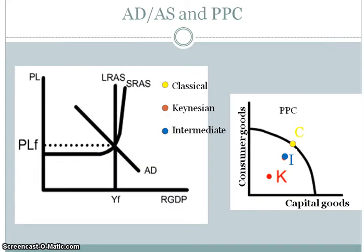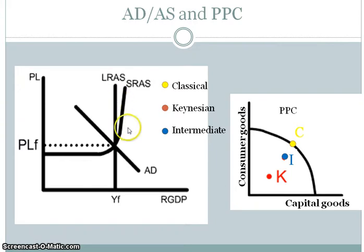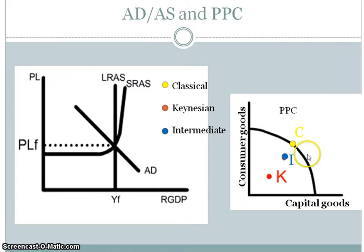For the ADAS model, remember that you've got the short-run aggregate supply curve and the long-run aggregate supply curve. And for the production possibility curve, we're talking about the maximum amount that you can produce with the given resources that you have.